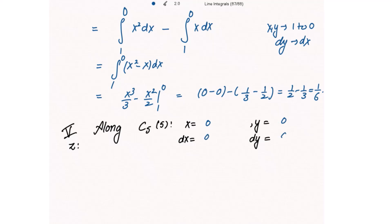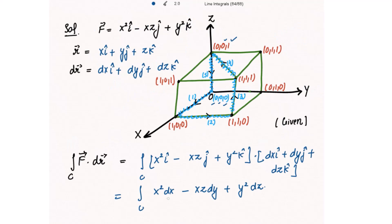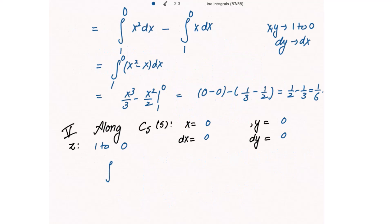Along path C5, dx and dy are both zero and z varies from one to zero. Since x and y are both zero, the complete integrand is zero, so the integral along C5 is zero.